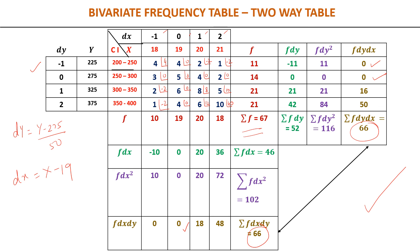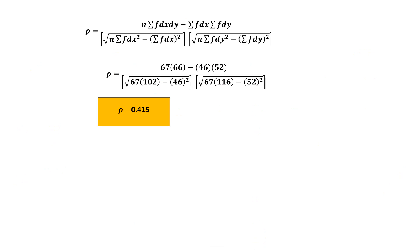We now substitute all the values obtained from the table into the correlation coefficient formula for bivariate frequency distribution. After substitution and simplification, the value of rho comes out to be 0.415. Recall that rho must always lie between −1 and +1, and this result satisfies that condition.